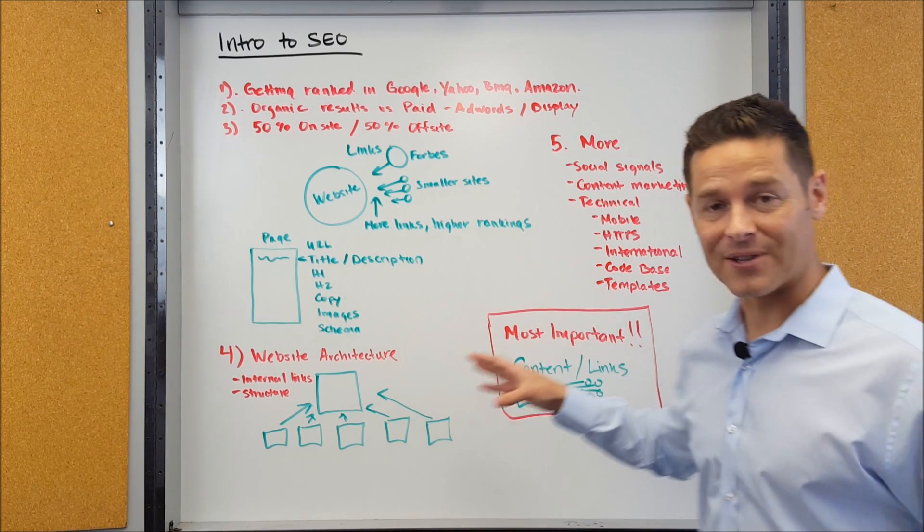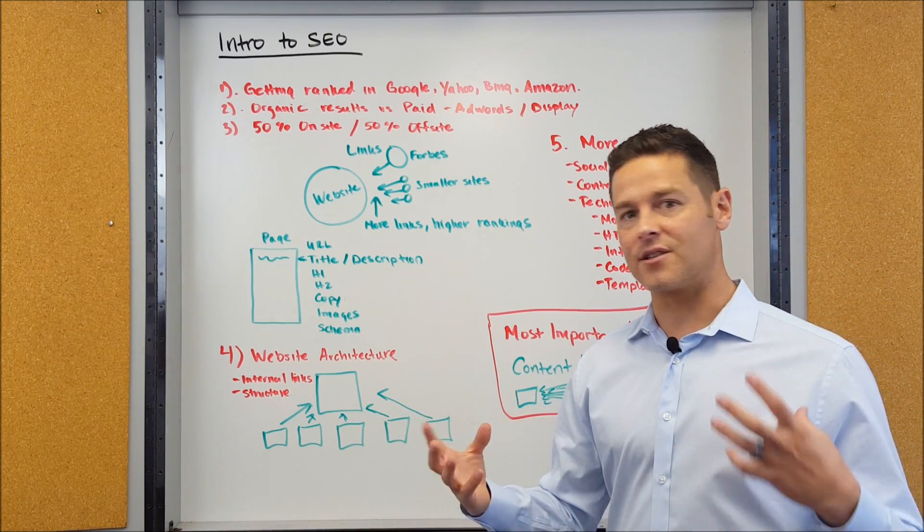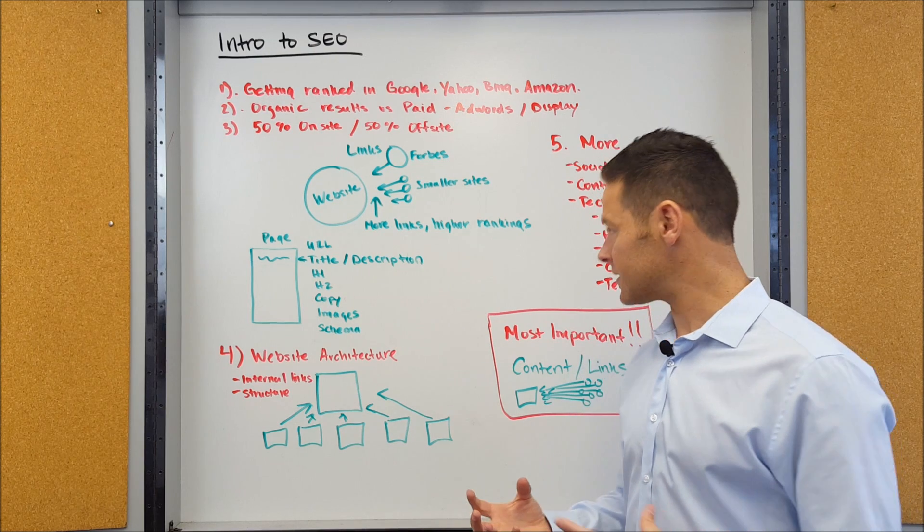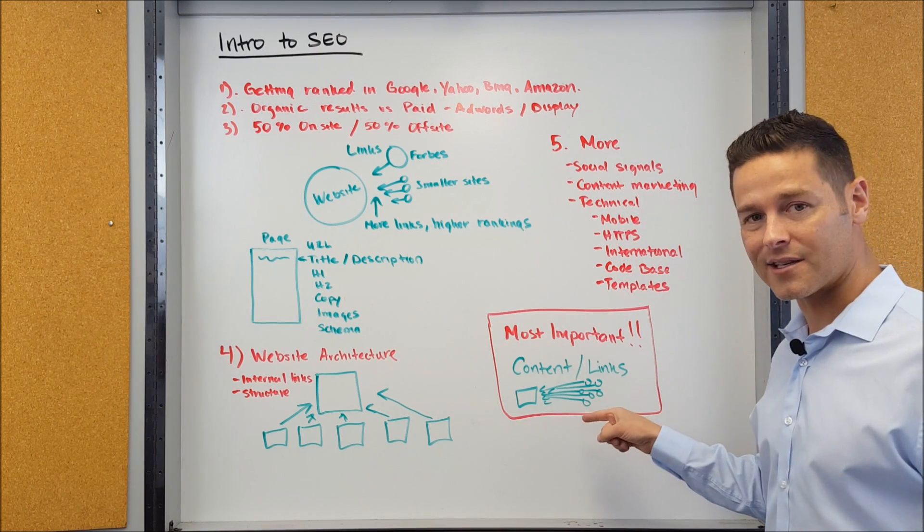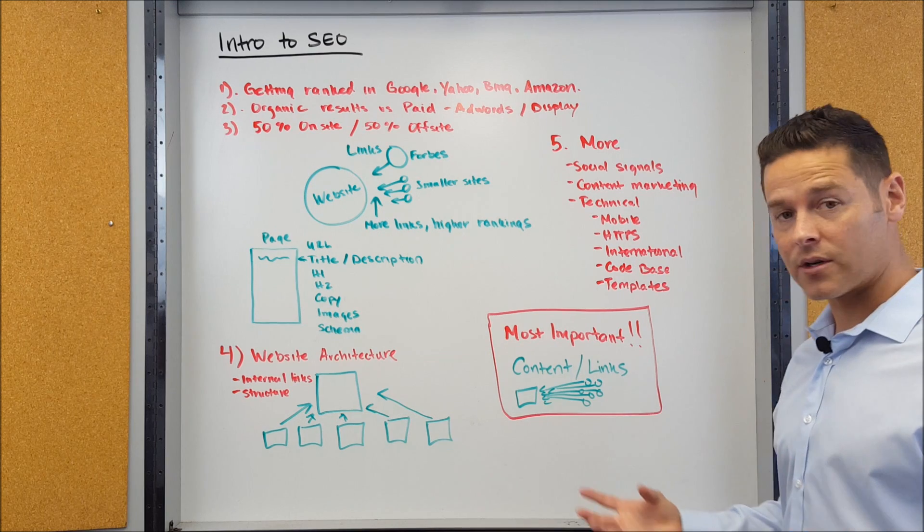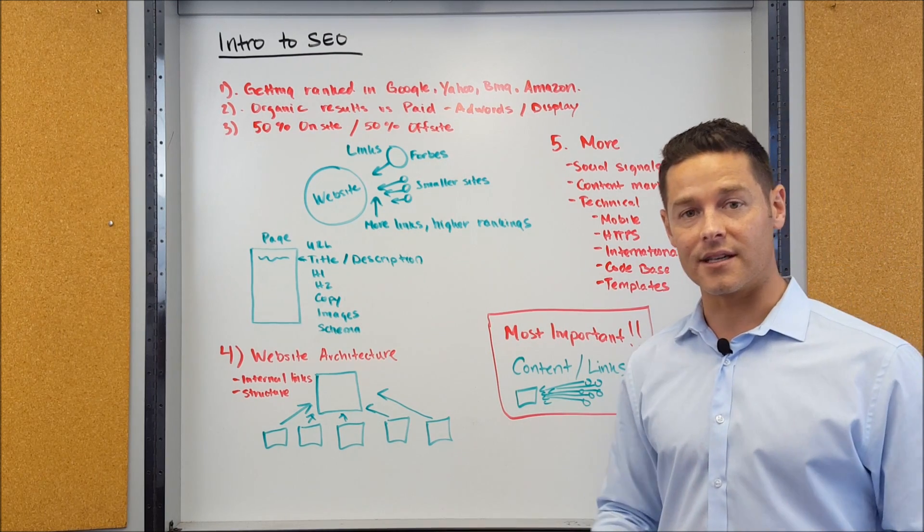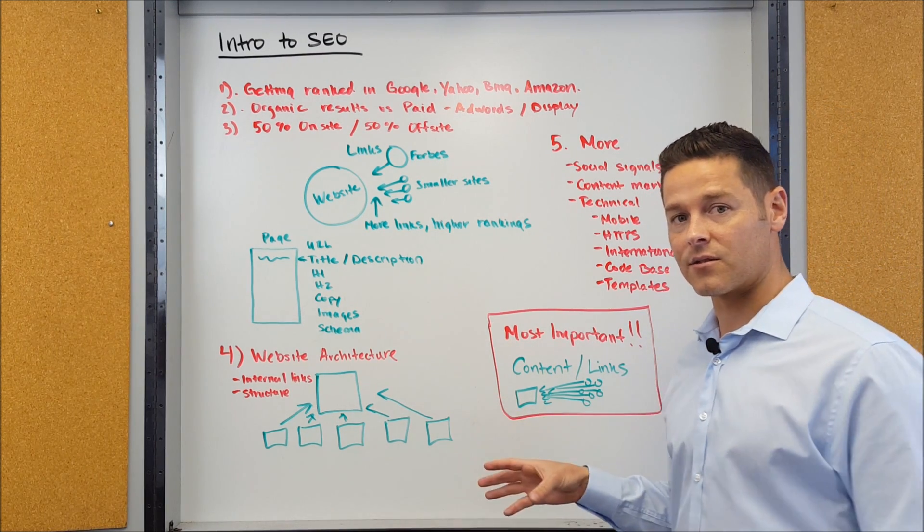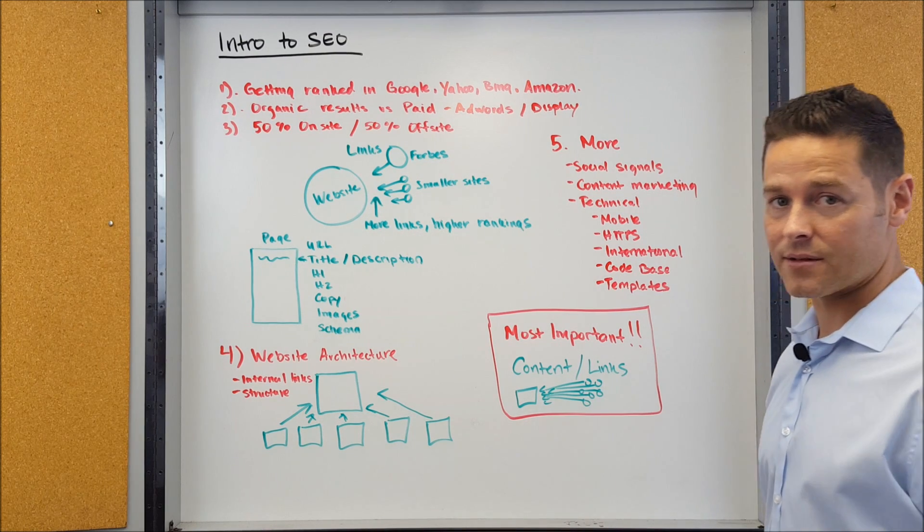Now, there's more stuff that goes into SEO, which is what makes it so complicated, but don't ever forget the most important things are always content and links. As long as there's nothing broken on your site, and as long as Google can get to your site, then content and links are the most important. But there are other things that are important also, such as social signals.